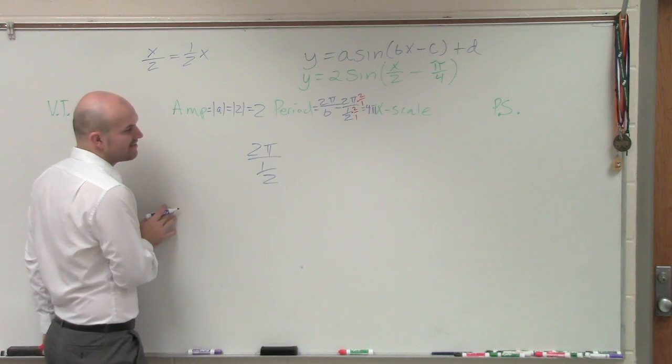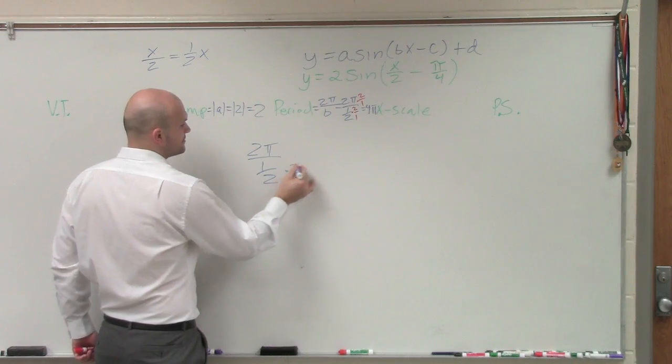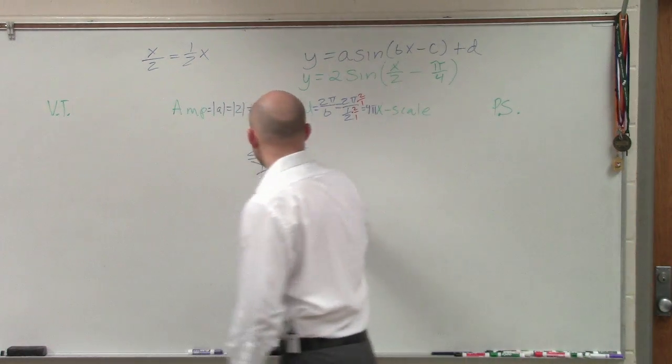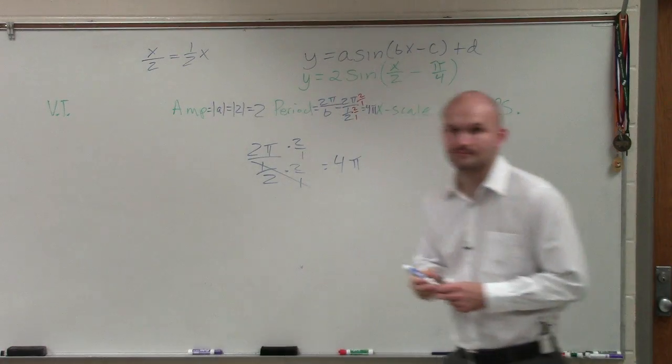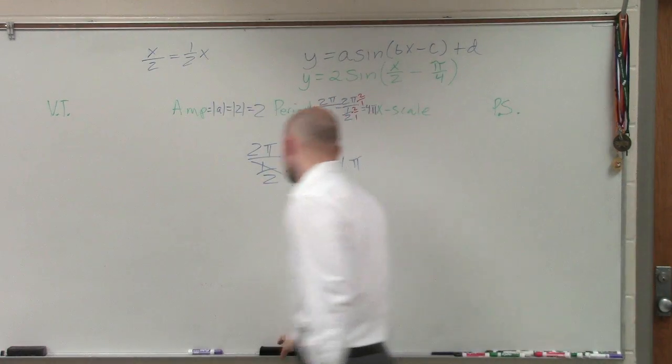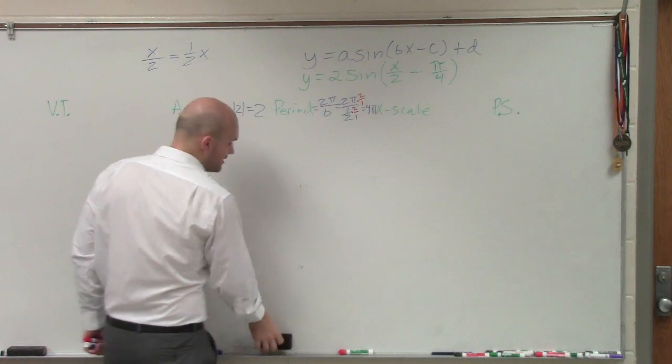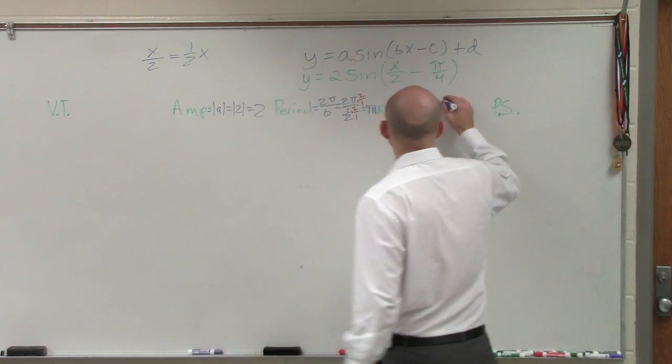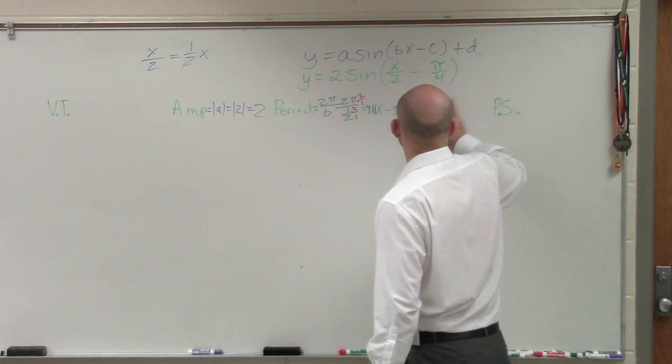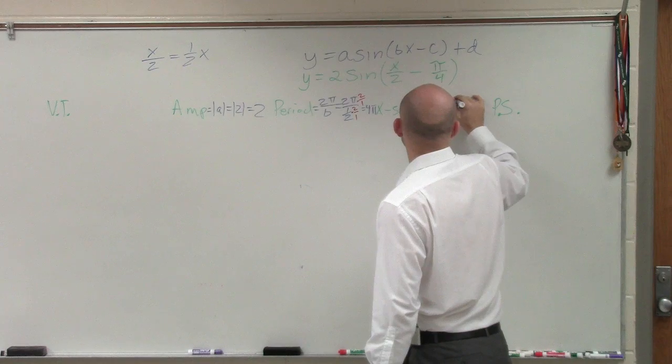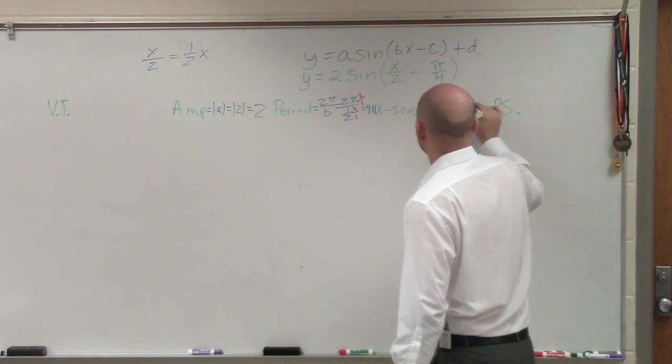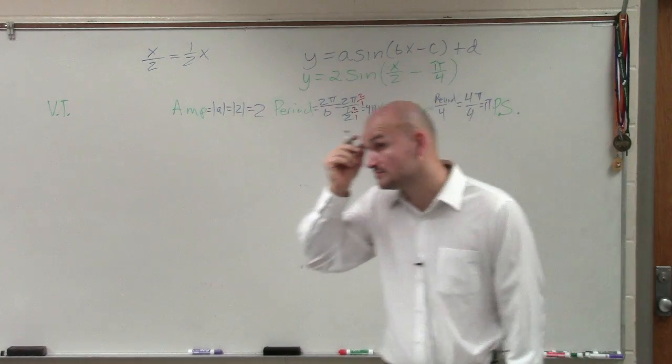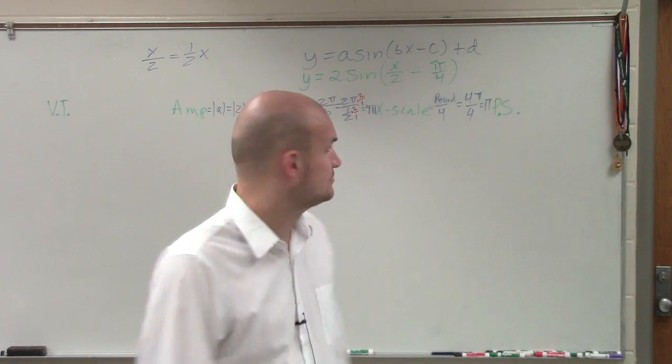So 2π divided by 1 half, and then we multiply by 2 over 1 times 2 over 1. That multiplies the 1, and we're just left with 4π. Everybody cool with that? So now let's go to the x scale. The x scale is you take your period and divide it by 4. Our period is 4π divided by 4, so therefore we just have π.